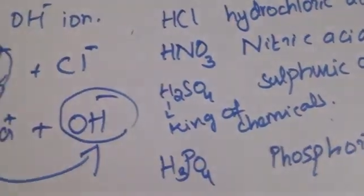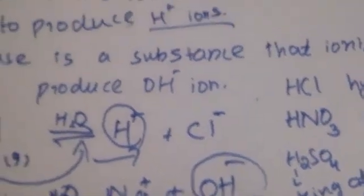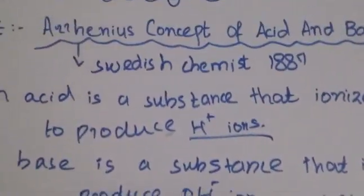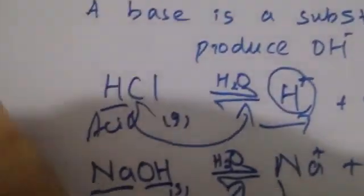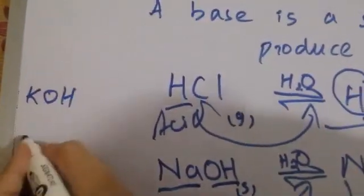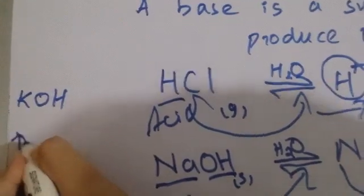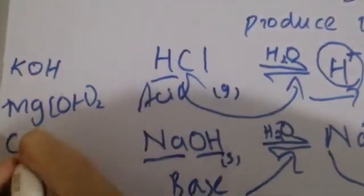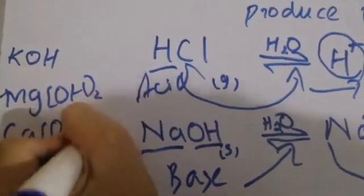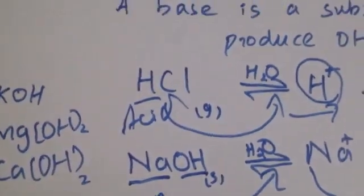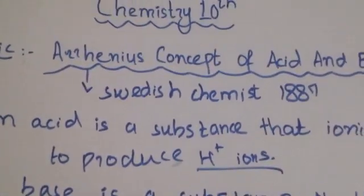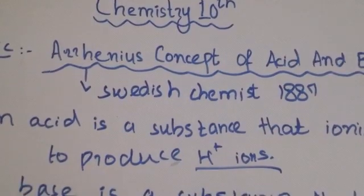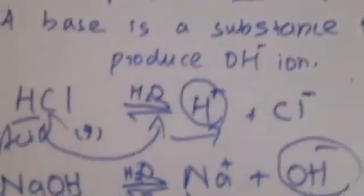We also have some important bases. NaOH is Sodium Hydroxide, KOH is Potassium Hydroxide, Mg(OH)₂ is Magnesium Hydroxide, and Ca(OH)₂ — calcium — is Calcium Hydroxide.